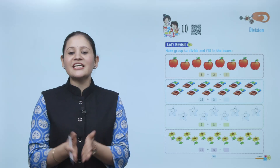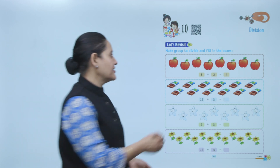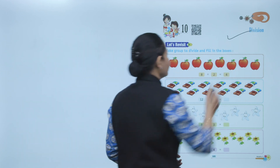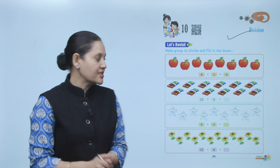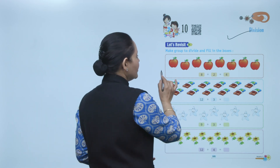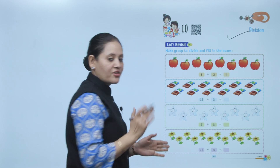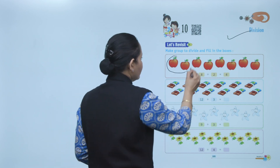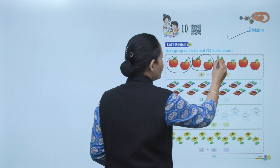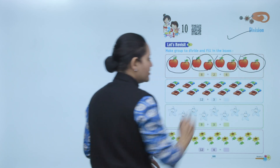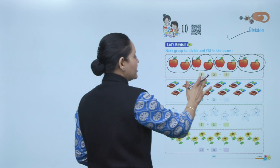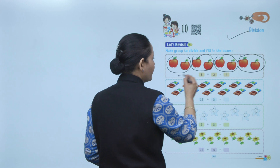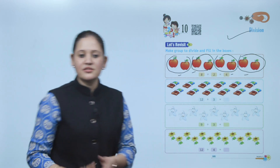Hello kids, welcome to today's maths class. Today we'll do division. Let's revisit making groups to divide and fill in the boxes. Total eight apples — we'll make groups of two: one, two, three, and four. So equal sharing means equal groups with an equal number. Two, two, two, two. So eight divided by two equals four. Clear?